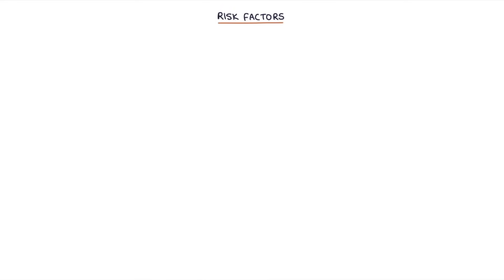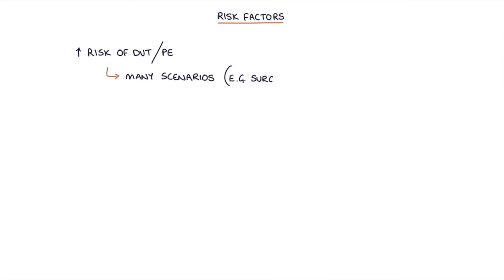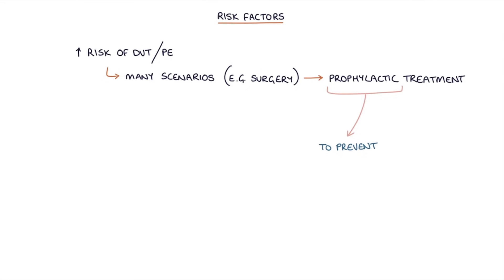Let's talk about the risk factors. There are several risk factors that can put a patient at higher risk of developing a DVT or a PE. In many of these situations, for example surgery, we give patients prophylactic treatment to prevent a venous thromboembolism.